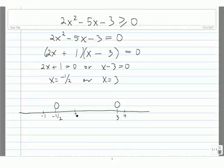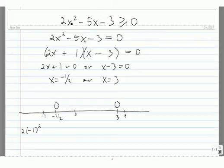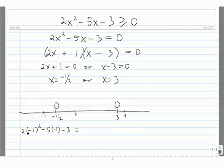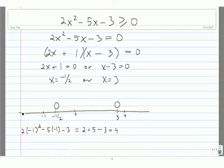We plug each of these three test values into the function and see whether it's positive or negative there. Starting with negative 1: we have 2 times negative 1 squared minus 5 times negative 1 minus 3. That's equal to 2 times 1, or 2, plus 5, minus 3, which equals 4. That's positive, so we know that everywhere below negative 1 half the sign of the function is positive.